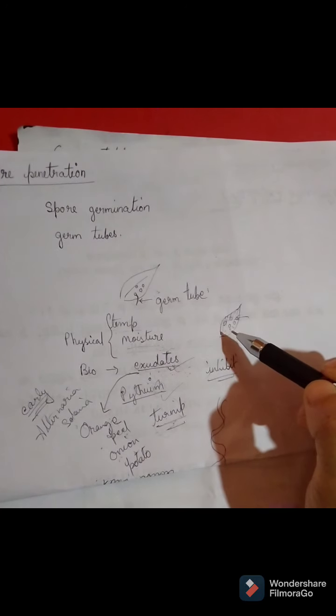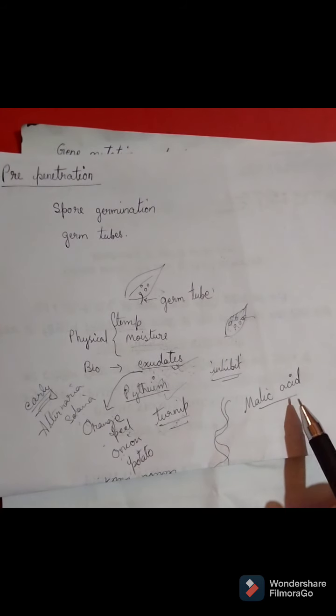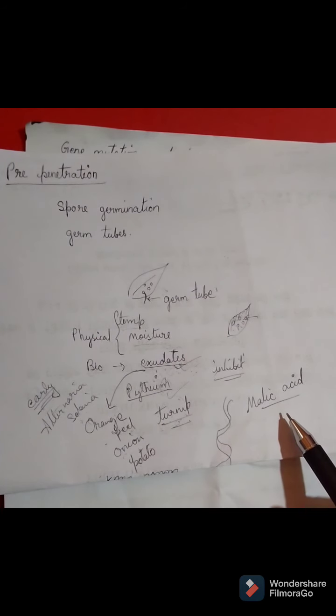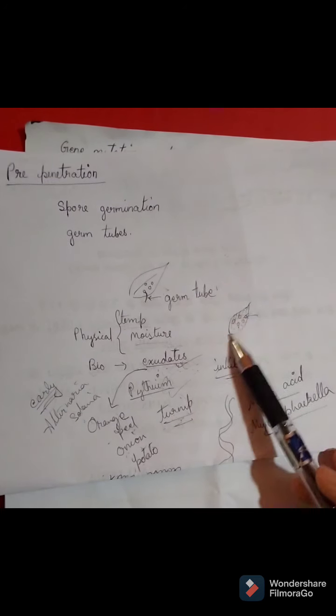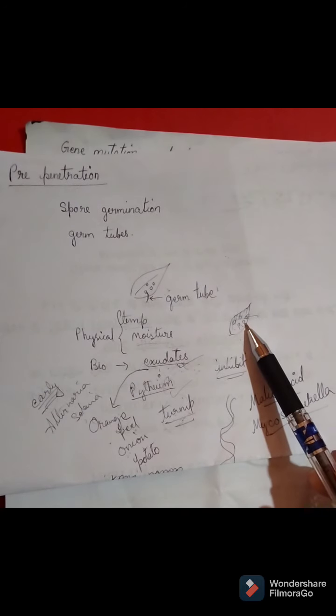Even malic acid, a substance secreted by some plant species — some leaves produce this malic acid — inhibits spore germination. For example, the species Mycosphaerella: if its spores come in contact with a host that produces malic acid, it will not be able to germinate.